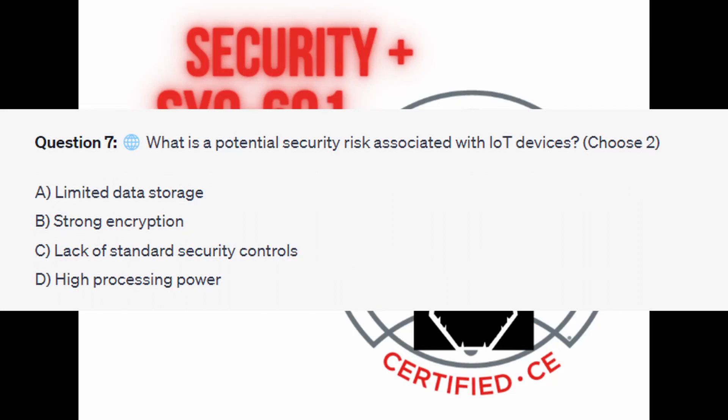Question number seven: what is the potential security risk associated with IoT devices? Choose two. Is it A, limited data storage? Is it B, strong encryption? Is it C, lack of standard security controls? Or is it D, high processing power?